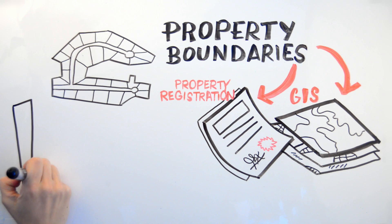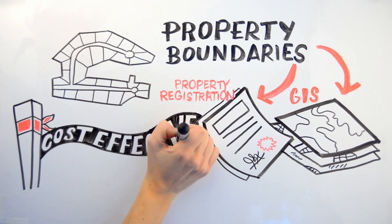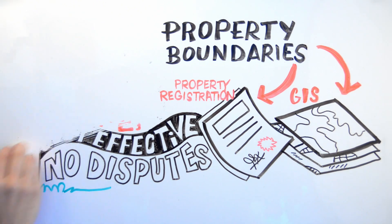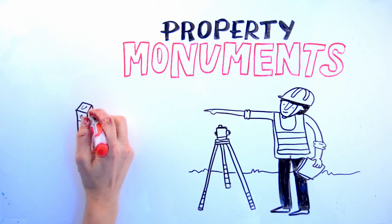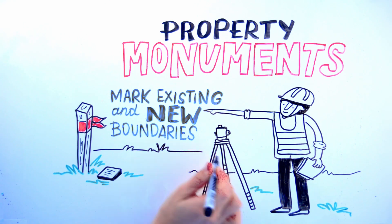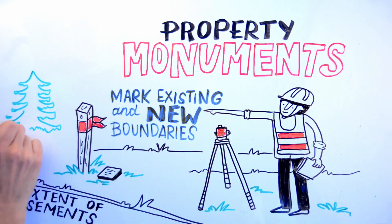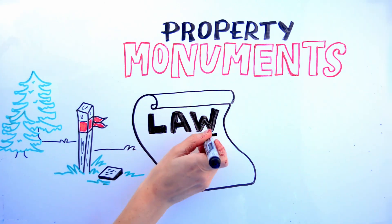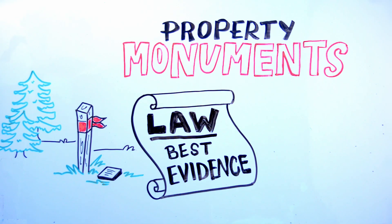Boundaries on the ground are important for safe and cost-effective construction and for avoiding disputes. Property monuments are set by land surveyors to mark existing and new boundaries and also to describe the extent of easements. According to law, a property monument in its original position is the best evidence of a boundary.